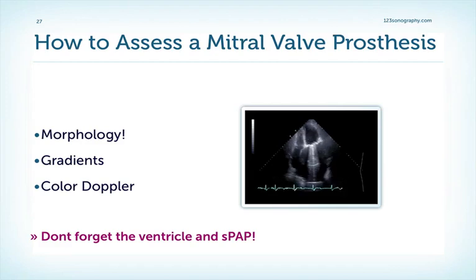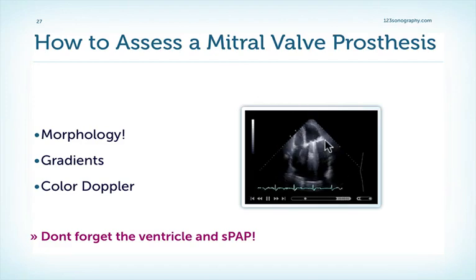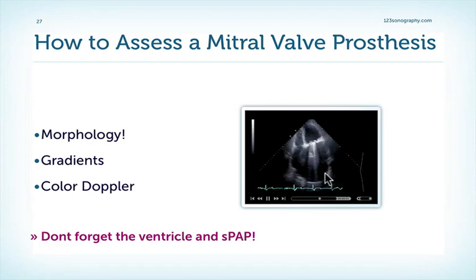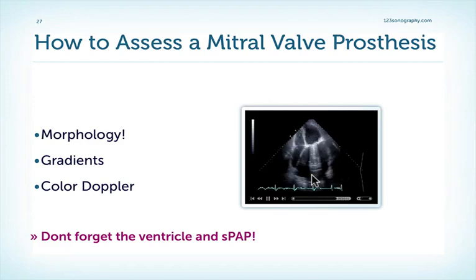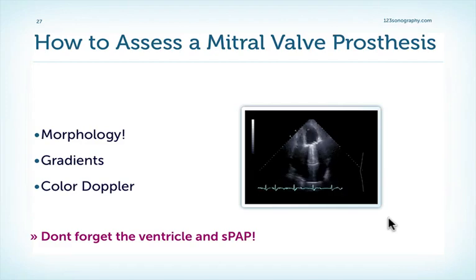Now you've learned which types of artificial valves are available and what their normal flow profile is. It's time to discuss how we can determine with echocardiography if these valves function normally. One of the most commonly made mistakes is that investigators don't look at the morphology of the valve — and not only the valve itself, but also the surrounding ring and the heart chambers. Of course, we also look at gradients and color Doppler. How to perform and interpret Doppler information will be shown in the following demonstration. And don't forget the systolic pulmonary artery pressure, which is very important and is an integral part of examining patients with prosthetic valves.